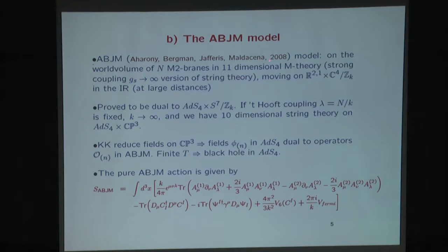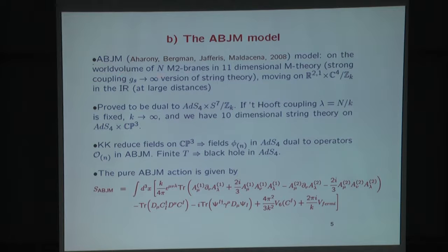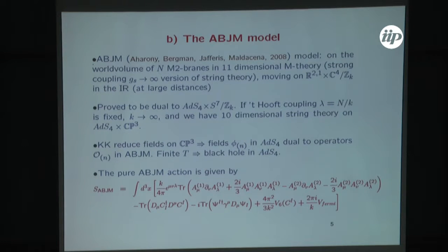ABJM stands for the people who wrote it in 2008. It's a model obtained on the worldvolume of N M2-branes in M-theory — M-theory being the strong coupling limit of string theory that lives in eleven dimensions. These N M2-branes move on the space C4 mod Z_K times a flat 2+1 dimensional space. In the IR limit — that is to say, at large distances — it has been proved to be dual to string theory in the background ADS4 cross S7 mod Z_K. If one fixes the 't Hooft coupling, which in this case is N over K, that means one has to take K to infinity together with N to infinity. Then S7 mod Z_K becomes CP3, so the gravity dual is string theory in ADS4 cross CP3.